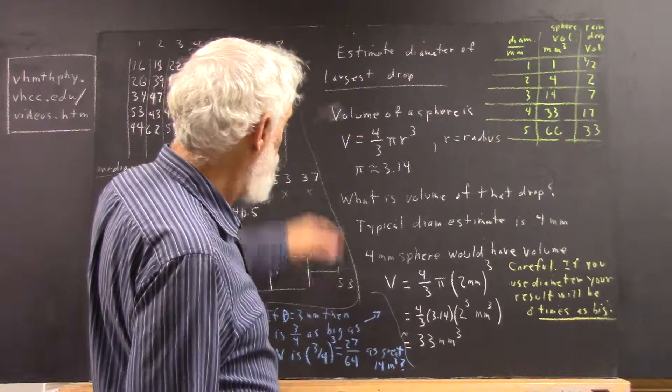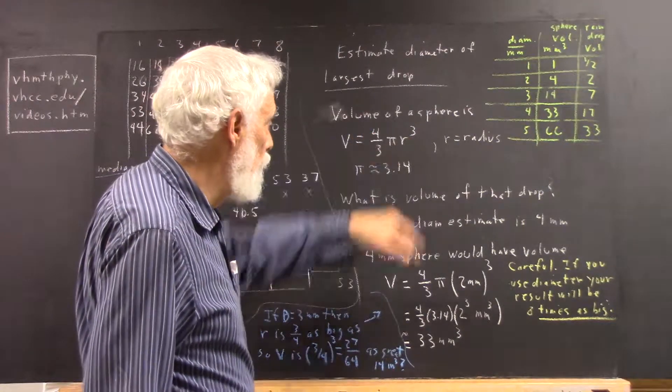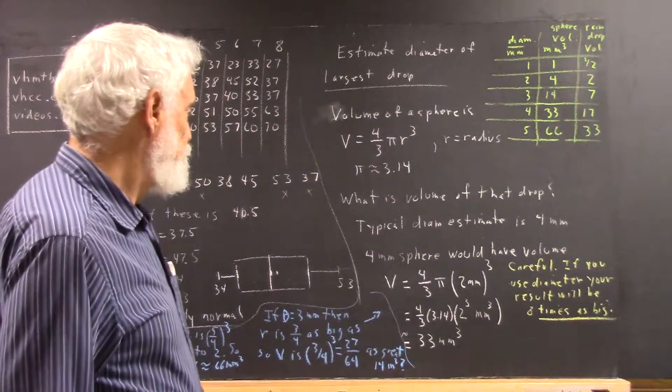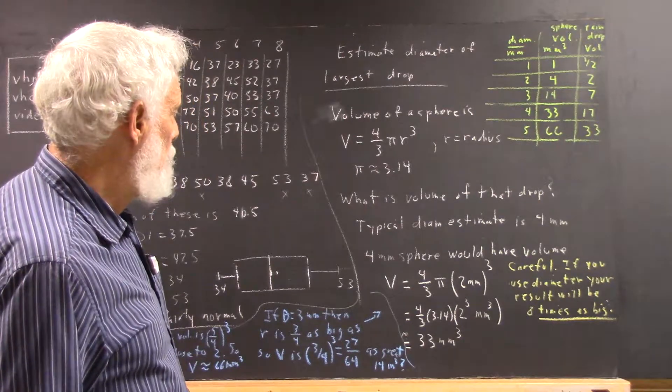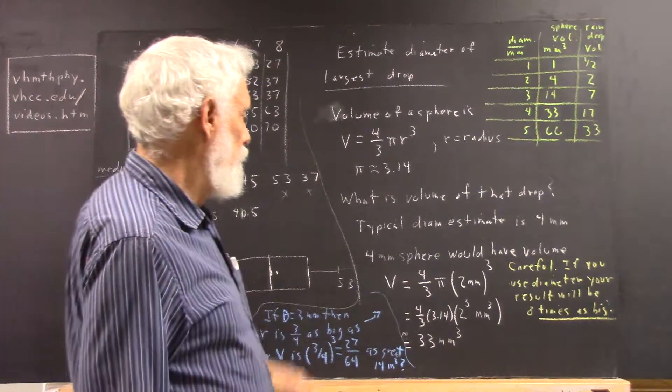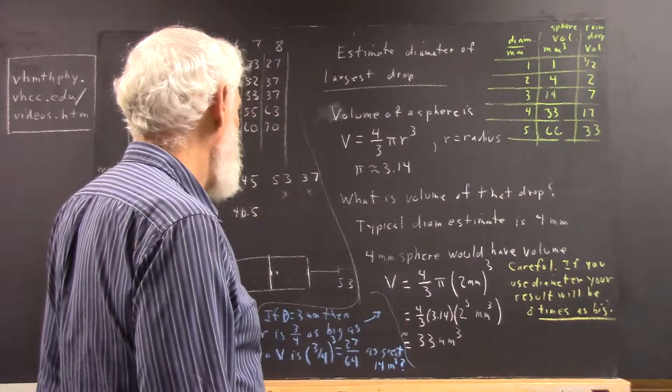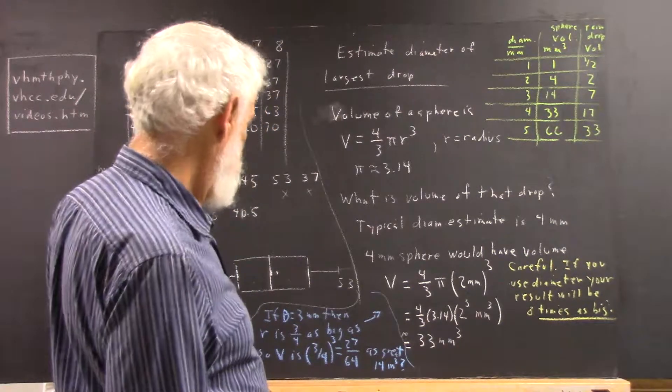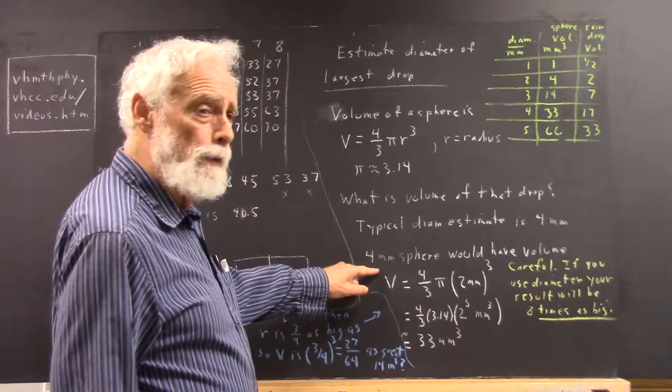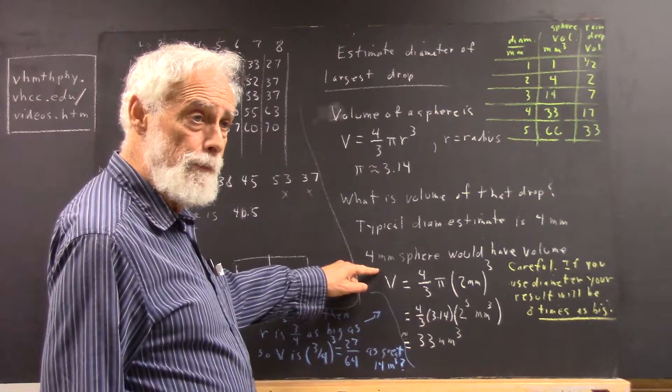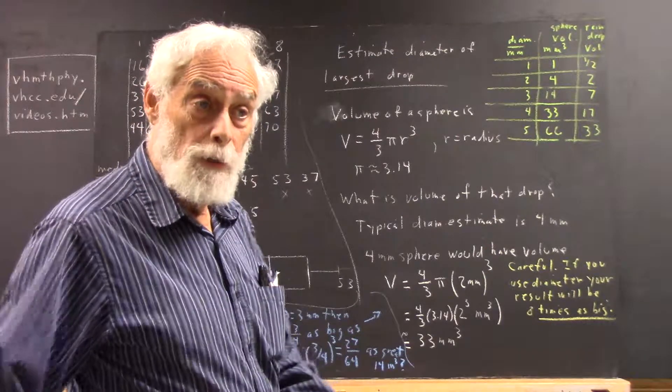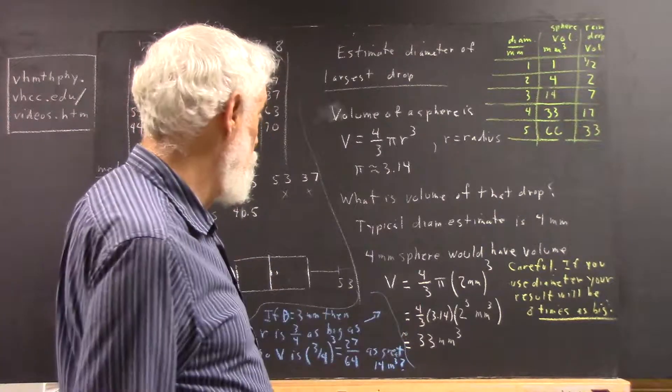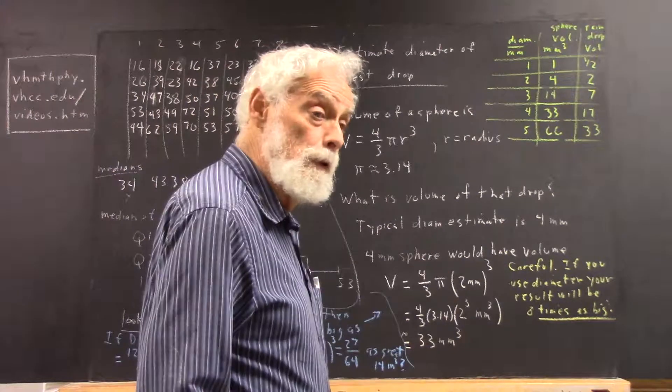Now, the volume of a sphere is actually four-thirds pi r cubed. And I asked people to get the volume of the drop from the estimated diameter of the largest. Well, somebody who estimated a four millimeter diameter would then start by calculating maybe the volume of a sphere of diameter of four millimeters.